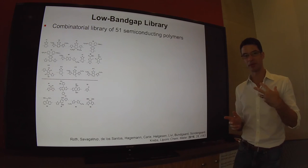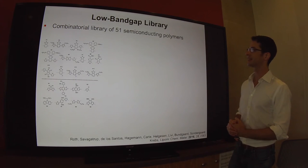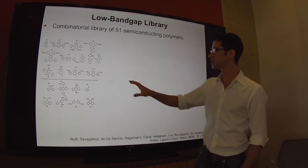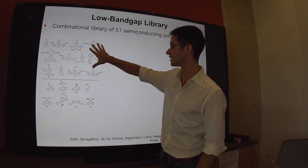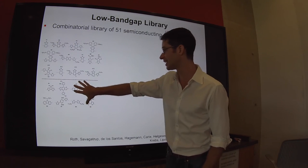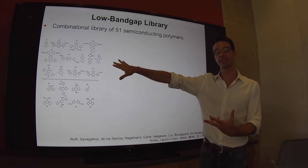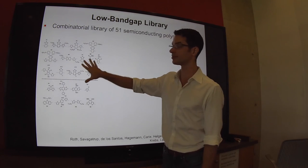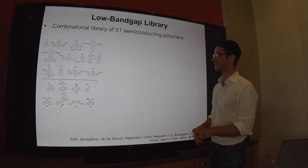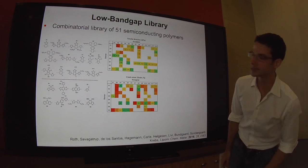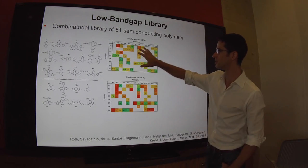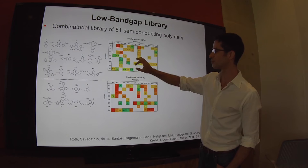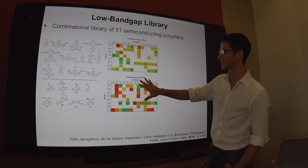The polythiophenes are not really regarded as the future of organic photovoltaics. What we did in collaboration with the Krebs group at DTU was look at a combinatorial library of 51 semiconducting polymers which combine 13 acceptors and eight donor materials. These were synthesized as part of a previous study for viability in roll-to-roll fabrication, but what we were interested in was the mechanical behavior and whether we could find some design rules that would predict the mechanical behavior of low-bandgap polymers.